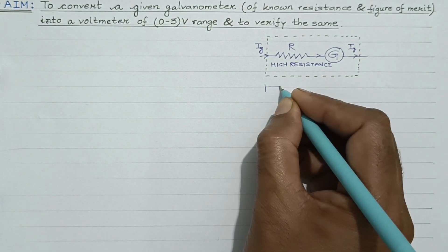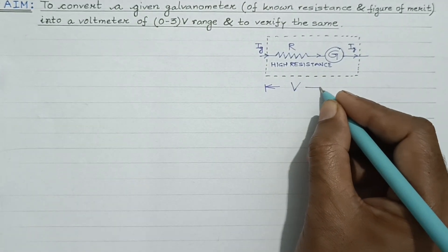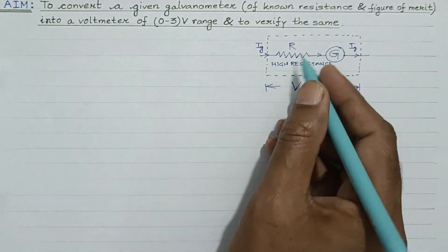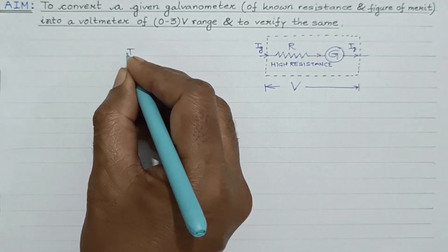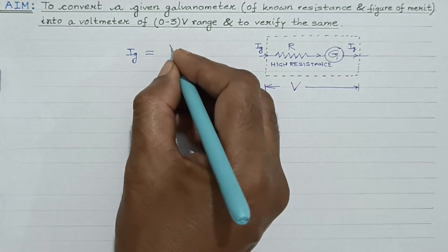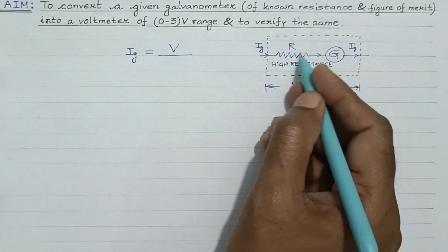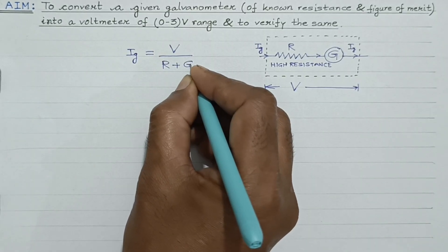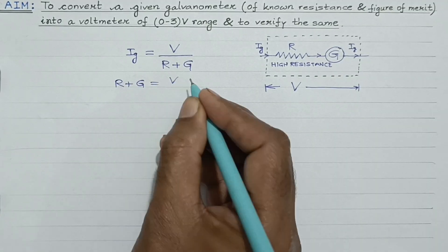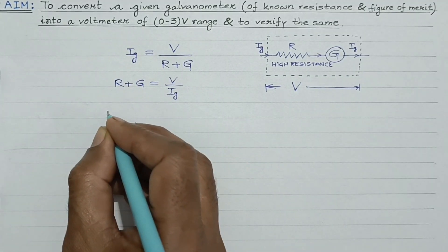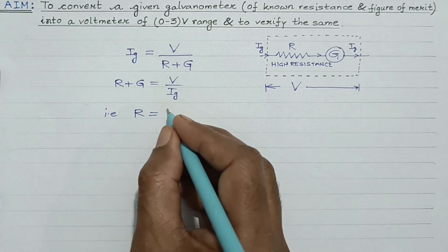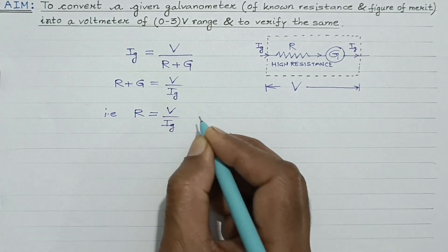Suppose the range of the voltmeter is V — 0 to 3 volt, so V is 3 volt. The current flowing through the series grouping of resistance R and galvanometer G is Ig. It is given by voltage across the series grouping divided by net resistance. Since R and G are connected in series, net resistance is R plus G. Rearranging, we get R plus G equals V divided by Ig. Therefore, the value of the high resistance wire is R equals V divided by Ig, minus G.